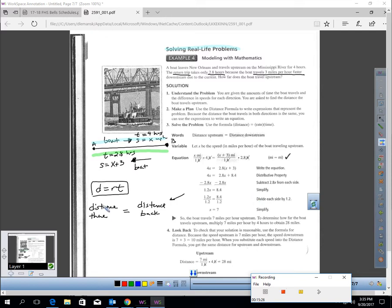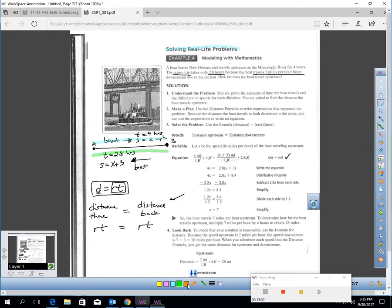The distance there. Does it make sense that distance is the same as rate times time? So, instead of distance, the rate and time there should equal the rate and time back. What was the rate and time there? The time was 4 hours and the rate was X. So, the rate and time there would be 4X. On the way back, the time was 2.8 and the rate was X plus 3. So, 2.8 times X plus 3 would be the rate back.